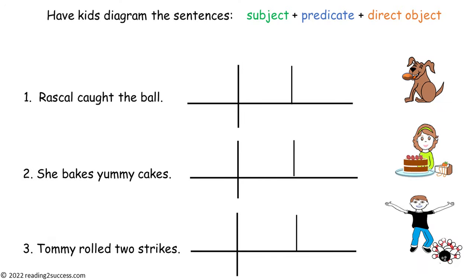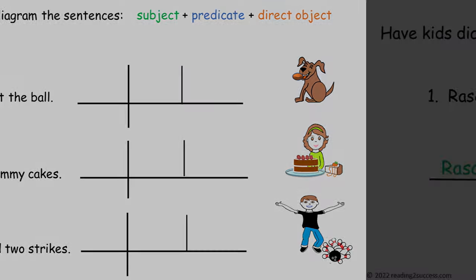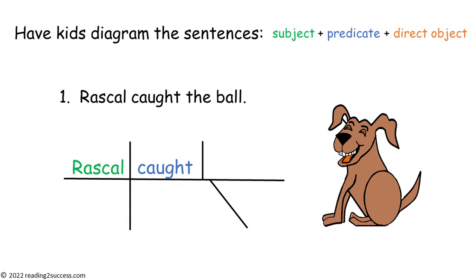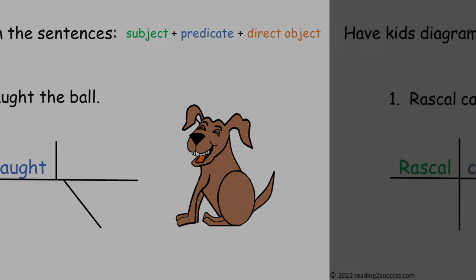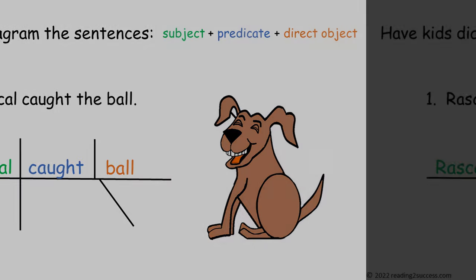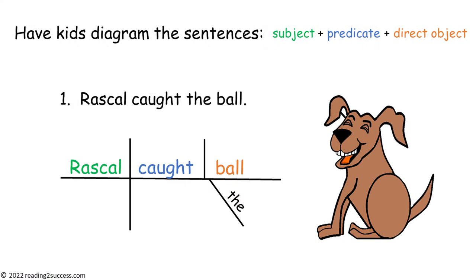Now have kids diagram the sentences for the subject, predicate, direct object pattern. Complete the first sentence with kids. The subject is Rascal, the predicate is cocked, the direct object is ball, and the modifier is the, modifying the word ball.